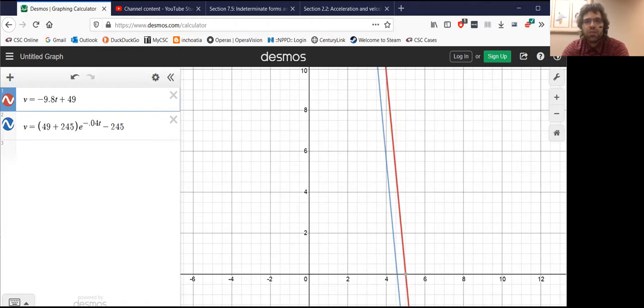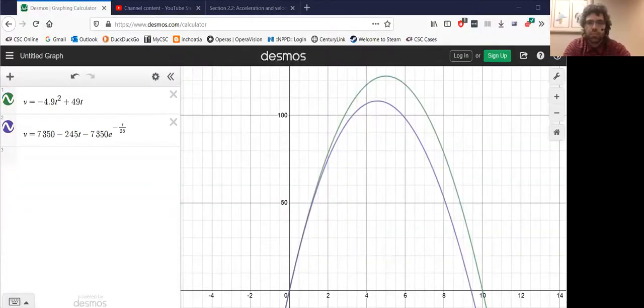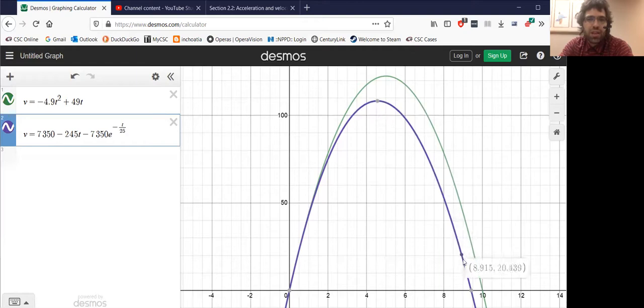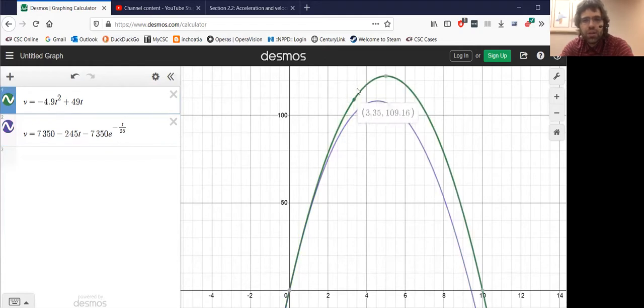Now let's do position. This purple curve represents height with air resistance. The green curve represents height without air resistance.